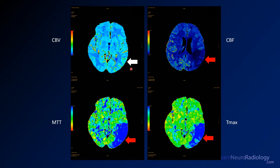Here you see the perfusion images. The cerebral blood volume is relatively maintained — it looks pretty normal — but you start to see areas of decreased blood flow, with a wedge-like region visible. On MTT you see a significant increase in mean transit time as well as T max. So what you're looking at here is predominantly an area of penumbra, although the flow is showing some early signs of decrease.